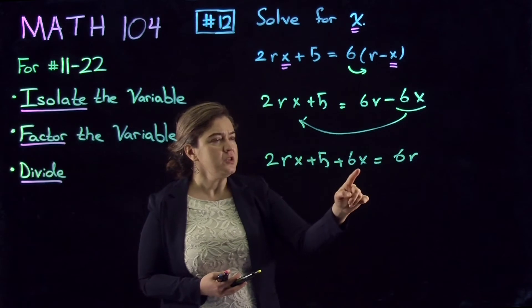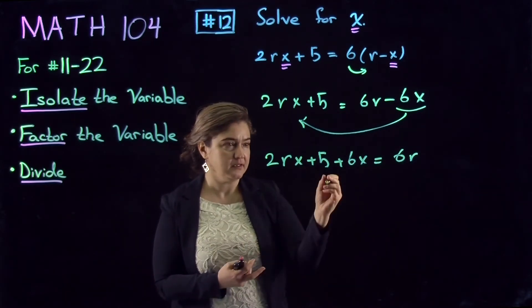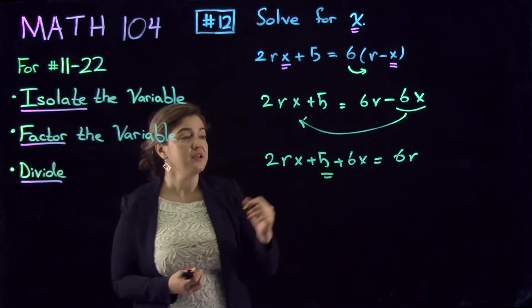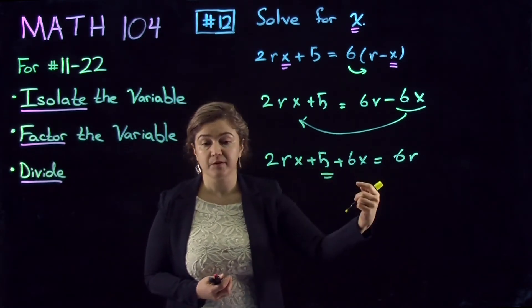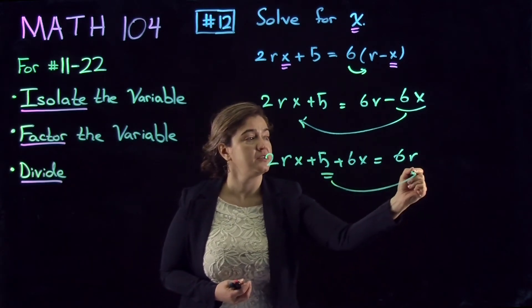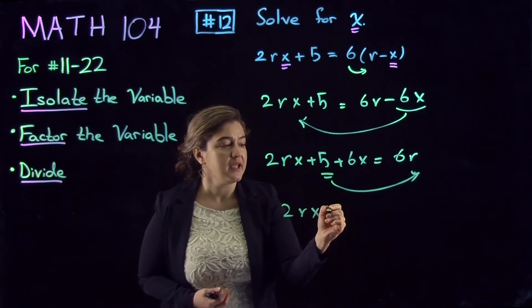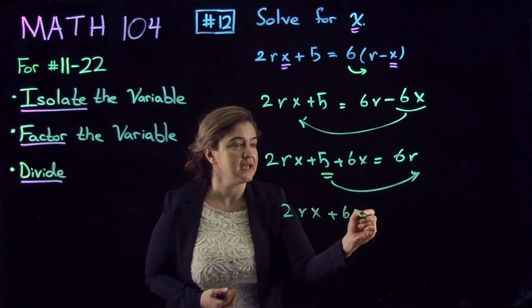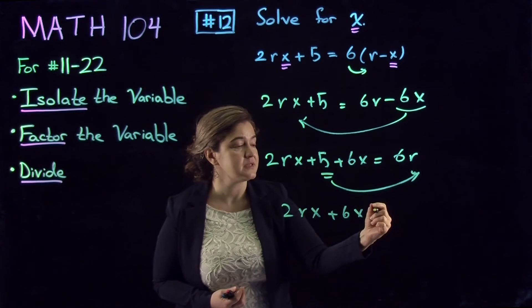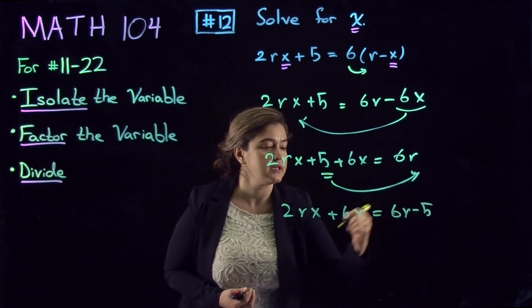Here, not quite isolated. There is another term in here that's 5. I need to subtract 5 from both sides of the equation to move 5 to the other side of the equation. So it becomes 2RX plus 6X, because 5 minus 5 is 0, equals 6R minus 5.